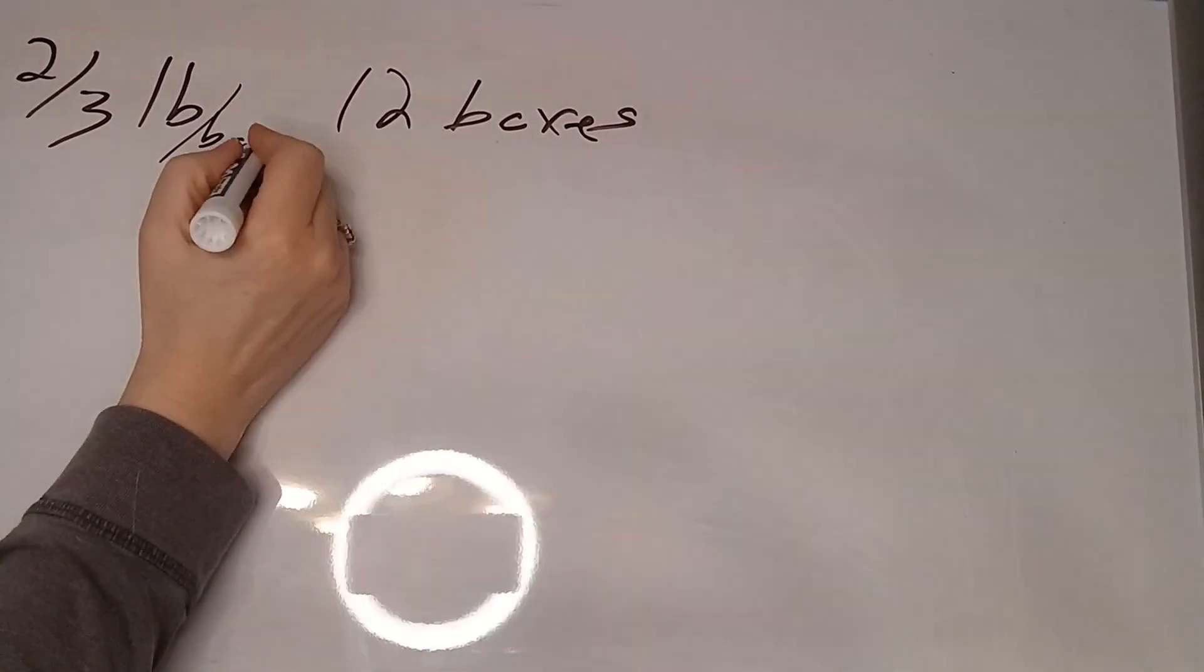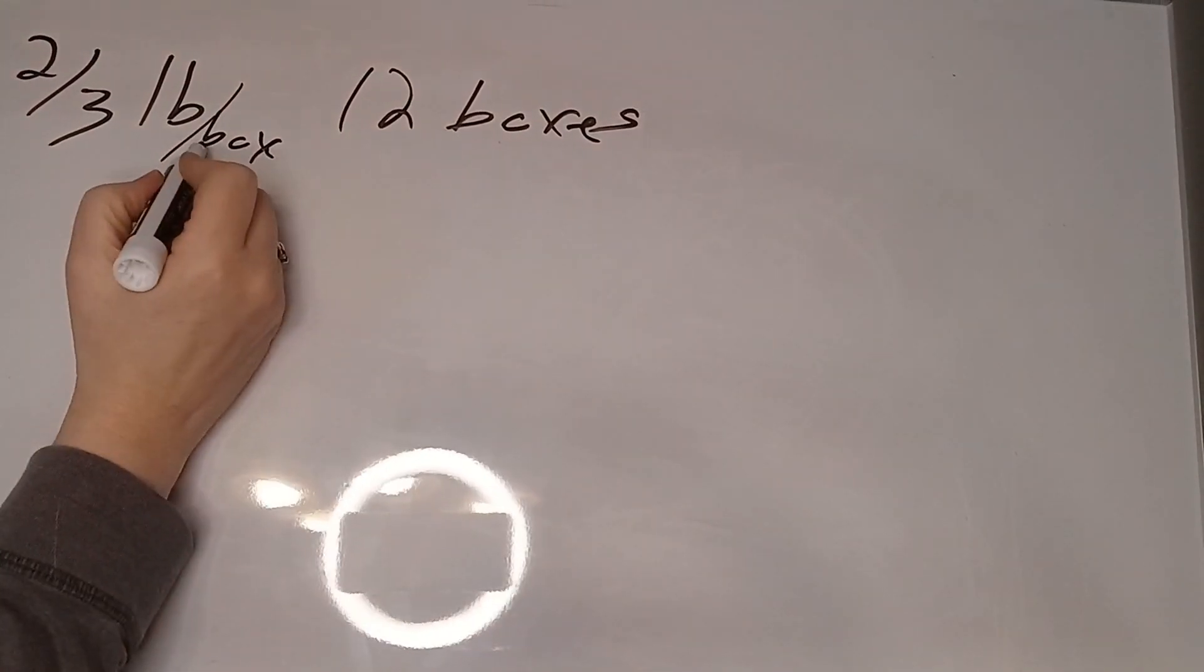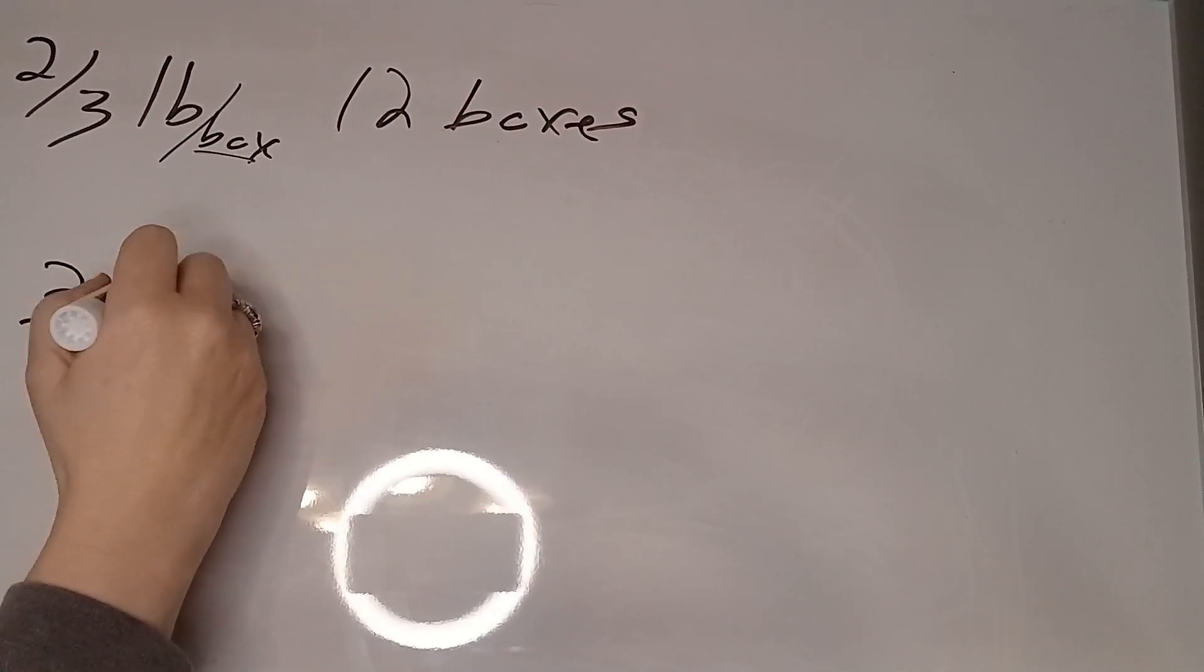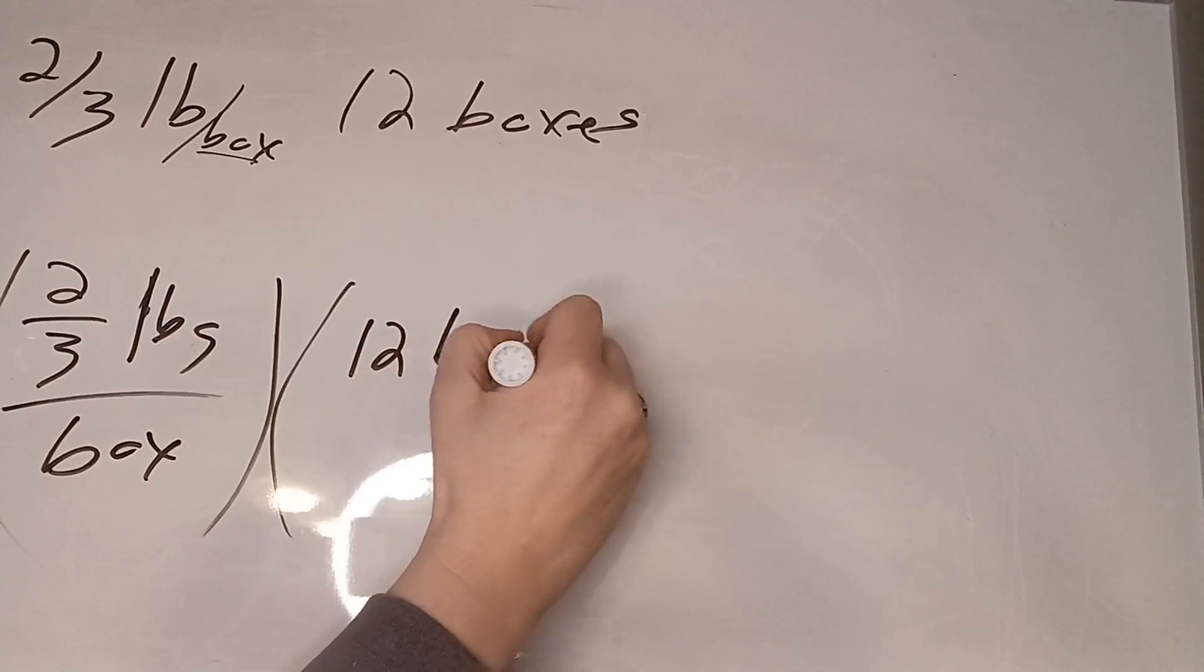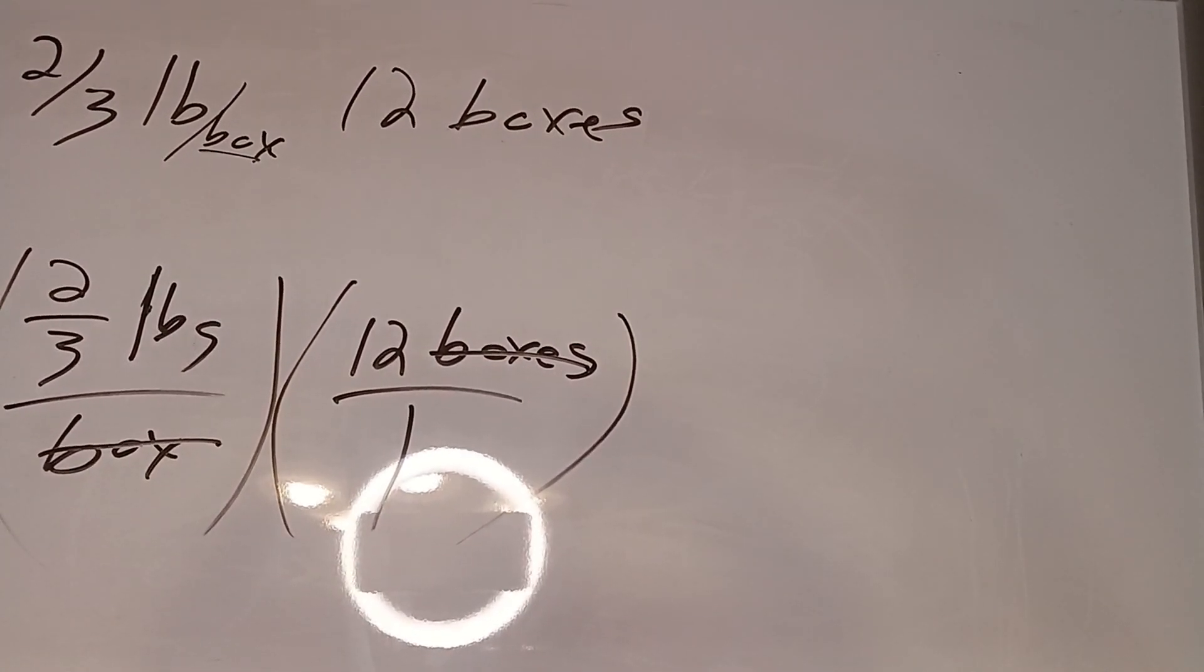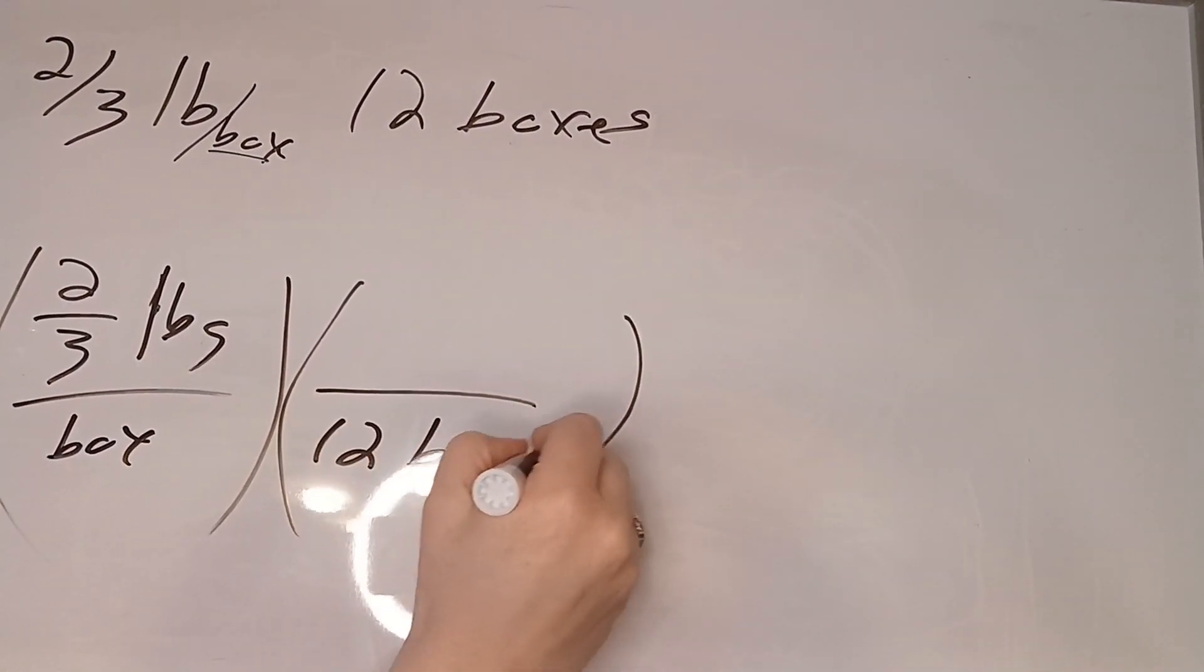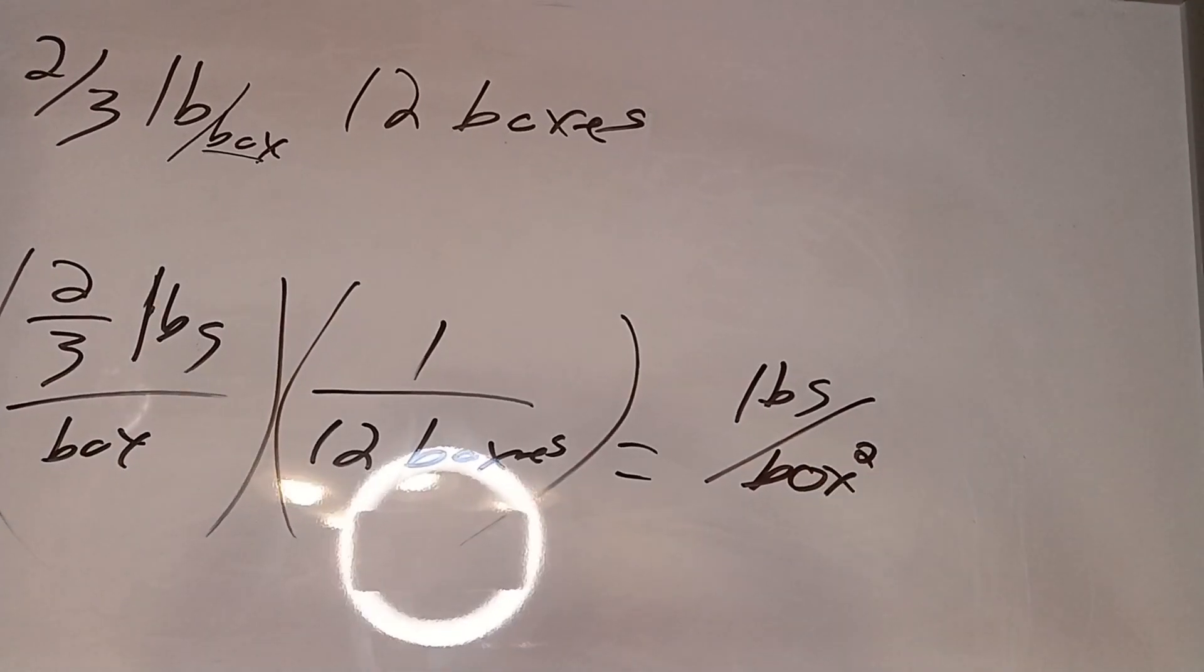All right, so when you're putting together things for a story problem, it's important to look at the units. Okay, so we've got pounds per box and boxes. So that means pounds per box and twelve boxes, we can cancel out the boxes. That's what tells us that we're multiplying. Because if we were dividing, we'd have units of pounds per boxes squared, and that doesn't make any sense at all.